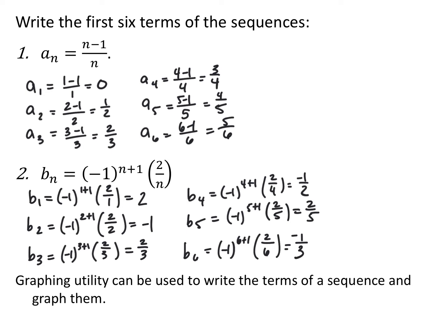Your graphing calculator does do sequences. If you go into your mode, you can actually change your calculator into sequence mode. Most of your calculators would be in function mode, which is the fourth option down, and you go all the way over to SEQ — that's sequence mode — and then you can actually graph and look at tables and have your calculator do more sequence stuff.